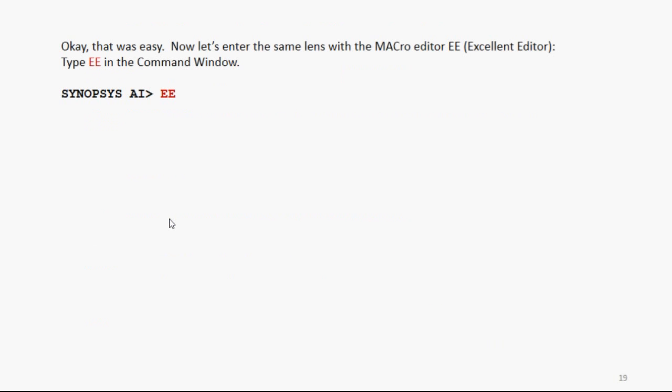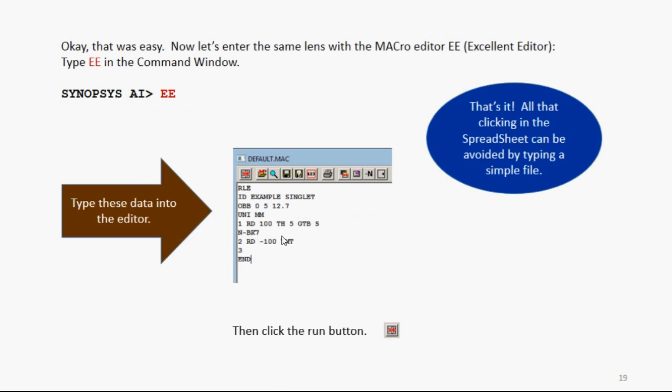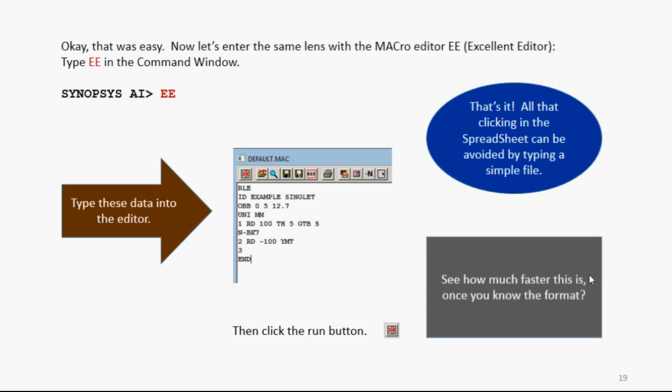That was easy, although I find it somewhat tedious. So now let's enter the same lens with the excellent editor. Type EE in the command window, and then type these data here into that window. Then click the run button. Now, isn't that easy? That's all you need to duplicate all that work that you did clicking and entering things in the spreadsheet. This shows you why I prefer to use the editor to enter a lens file. It's really much quicker and easier.